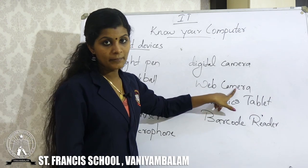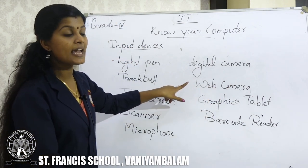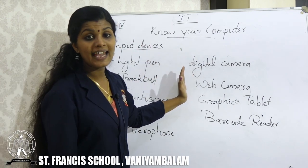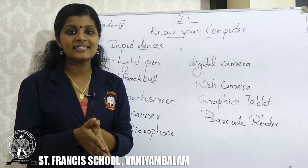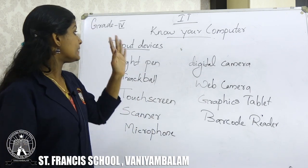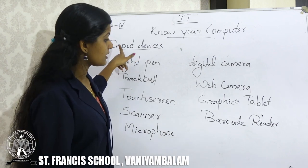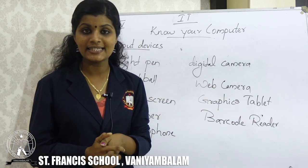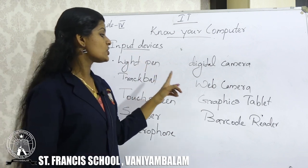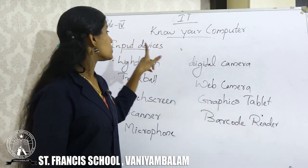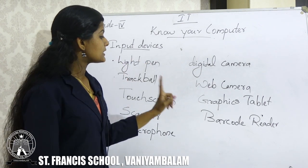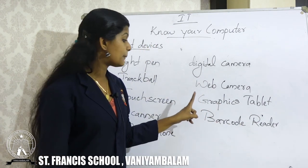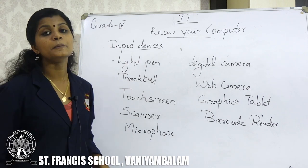Web camera is also used to take pictures and videos lively, but the difference is that it can be fixed on the computer — by fixing it, we take pictures and videos. It is also an input device. Graphics tablet lets us draw pictures and graphics on the tablet just like using a pencil on paper — it is also an input device. The last one is barcode reader, used to read machine-readable codes. It is also an input device.